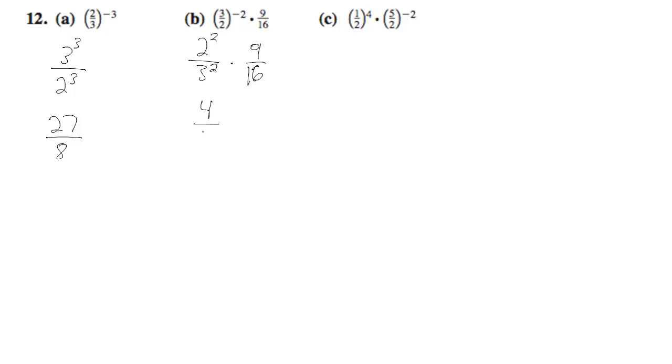So, 4 over 9 times 9 over 16. The 9's cancel out, and the 16 becomes a 4. The 4 becomes a 1, and we end up with 1 over 4.